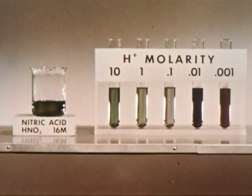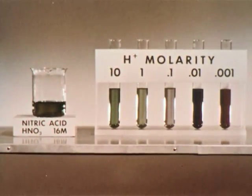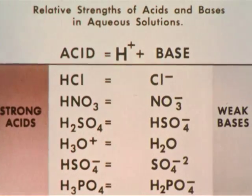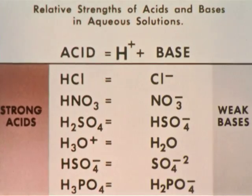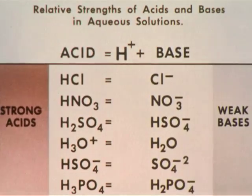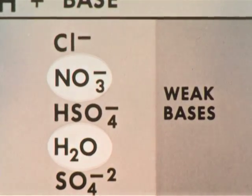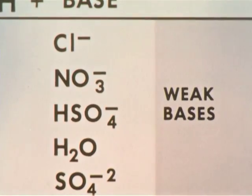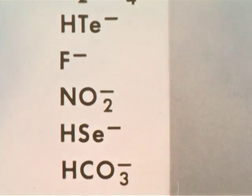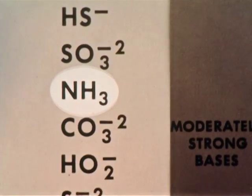If we are to reduce the acidity, we need to have present a stronger proton acceptor, that is, a stronger base than water or nitrate ion. This chart shows the relative strengths of certain acids and bases. We see that nitrate ion and water are among the weak bases, that is, poor proton acceptors. Looking down the list for a stronger proton acceptor, preferably a base containing a high percentage of nitrogen, we find NH3, ammonia.